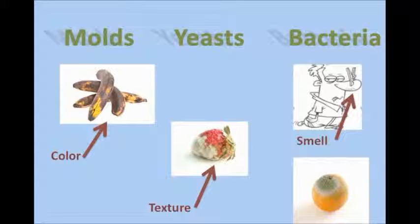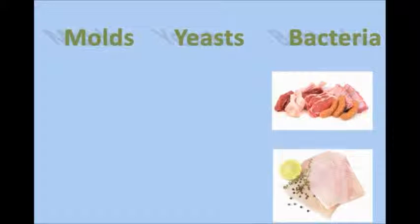Bacteria are known for the most rapid spoiling of protein-based foods, such as meat, poultry, fish, and dairy. The waste they produce is the cause of the foul smell and rotten appearance of spoiled foods. Sometimes spoiled foods appear and smell safe, but can still contain harmful bacteria such as salmonella and E. coli.